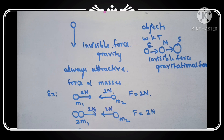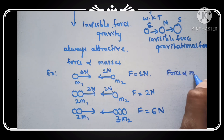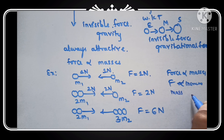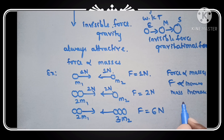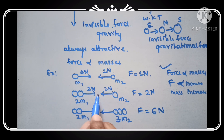Next, if you add another particle of mass, that is 3M2, what is the product of masses here? F is equal to the product of masses — 2 into 3 is 6, so 6 Newton. What it means is that the force is directly proportional to the product of masses. When the masses increase, the force also increases. So this is the first case: the force is directly proportional to the masses, and when the particle mass increases, the force also increases.